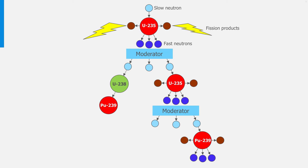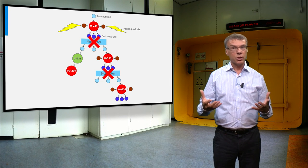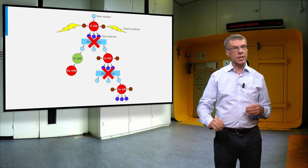In a fast reactor we use no moderator to slow down the neutrons. Of course, the probability to fission uranium-235 becomes much smaller in this case.